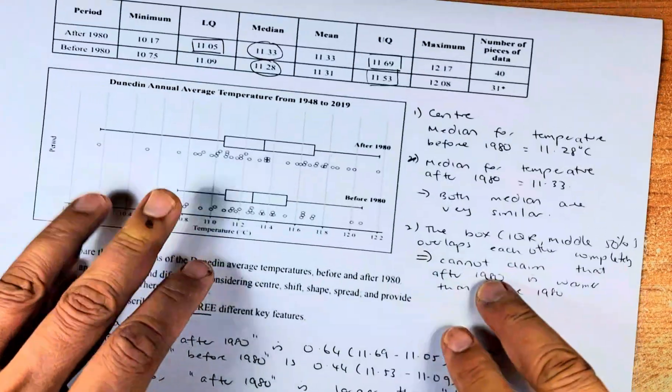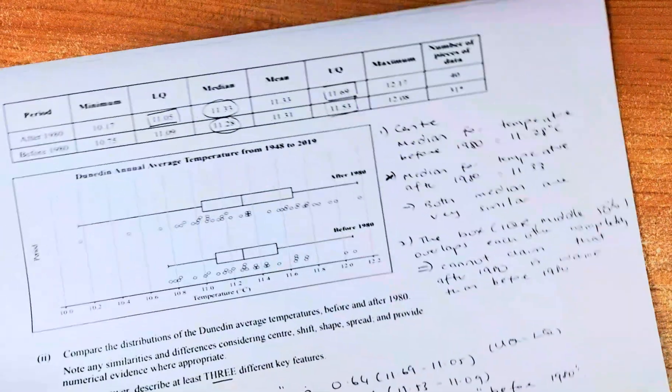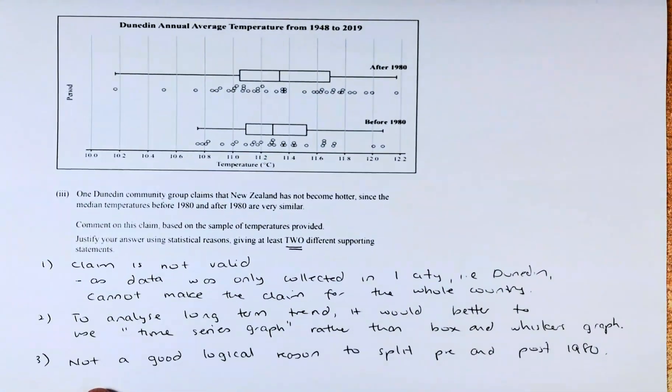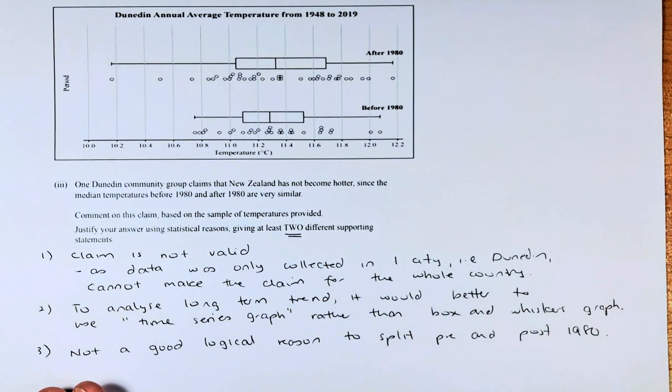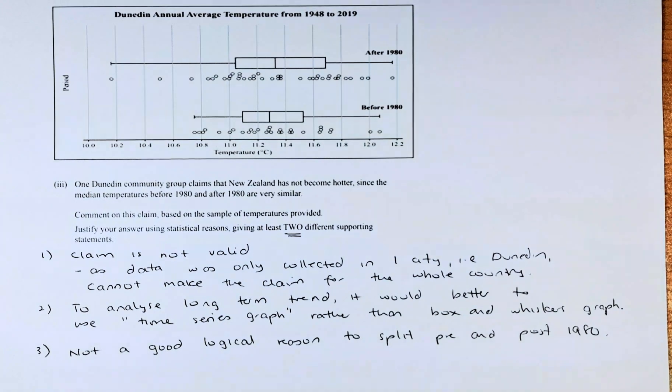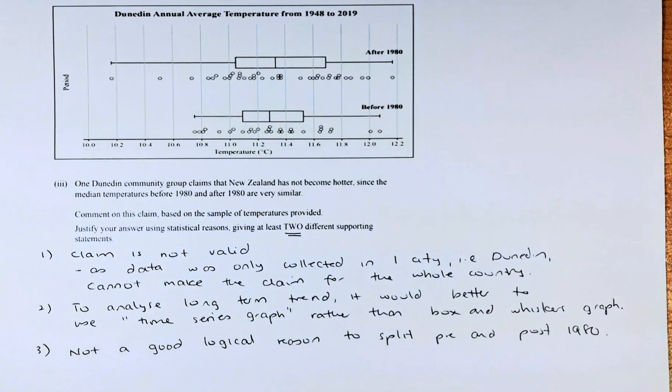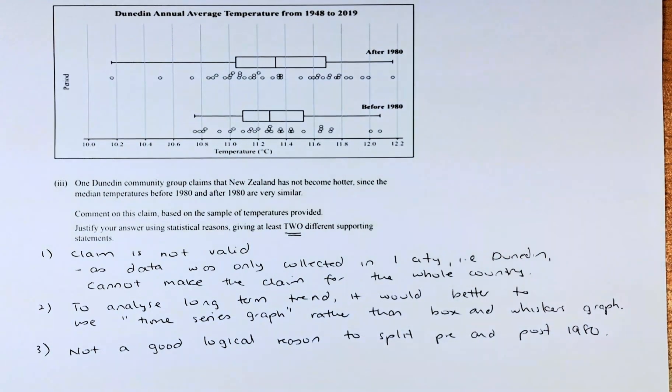Last but not least, we are going to look at part three of the question. One Canadian community group claimed that New Zealand has not become hotter since the median temperature before 1980 and after 1980 were very similar. Comment on the claim based on the sample of temperatures provided. Justify your answer giving two supporting statements. I'm going to give you three.